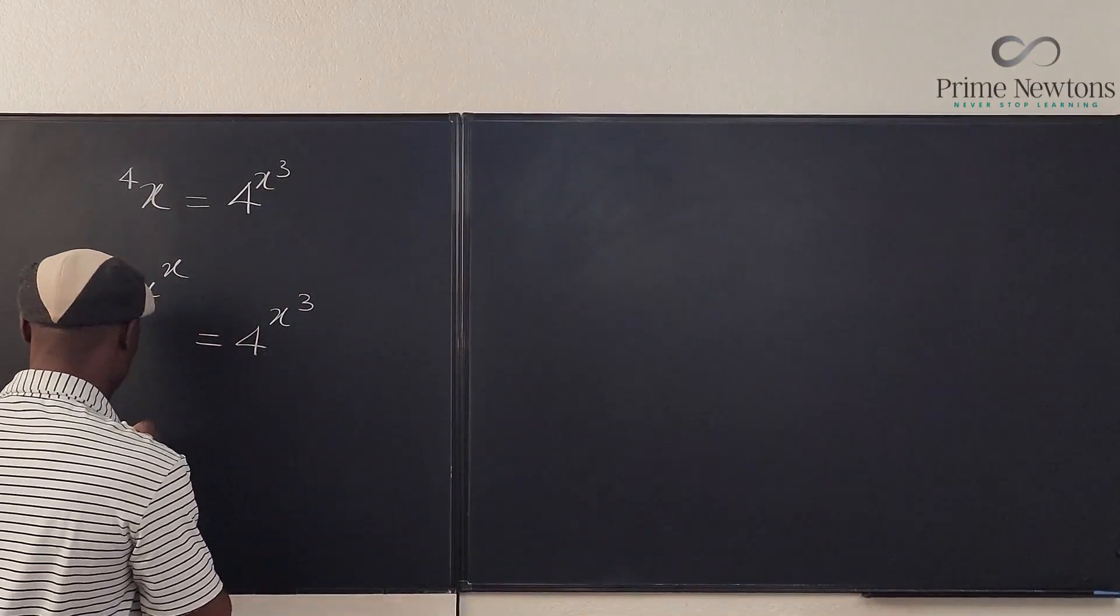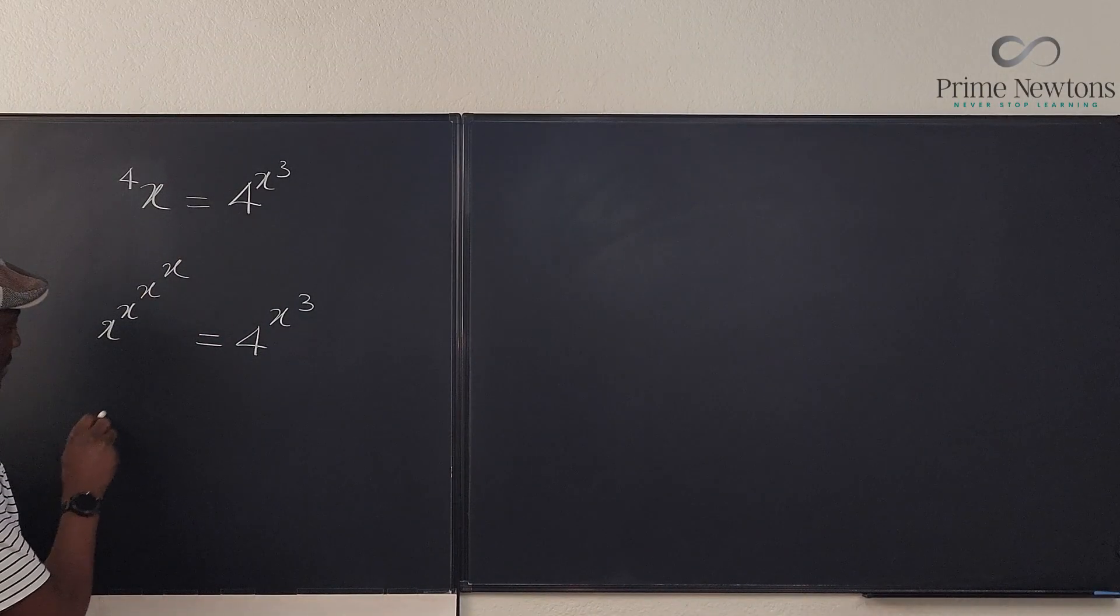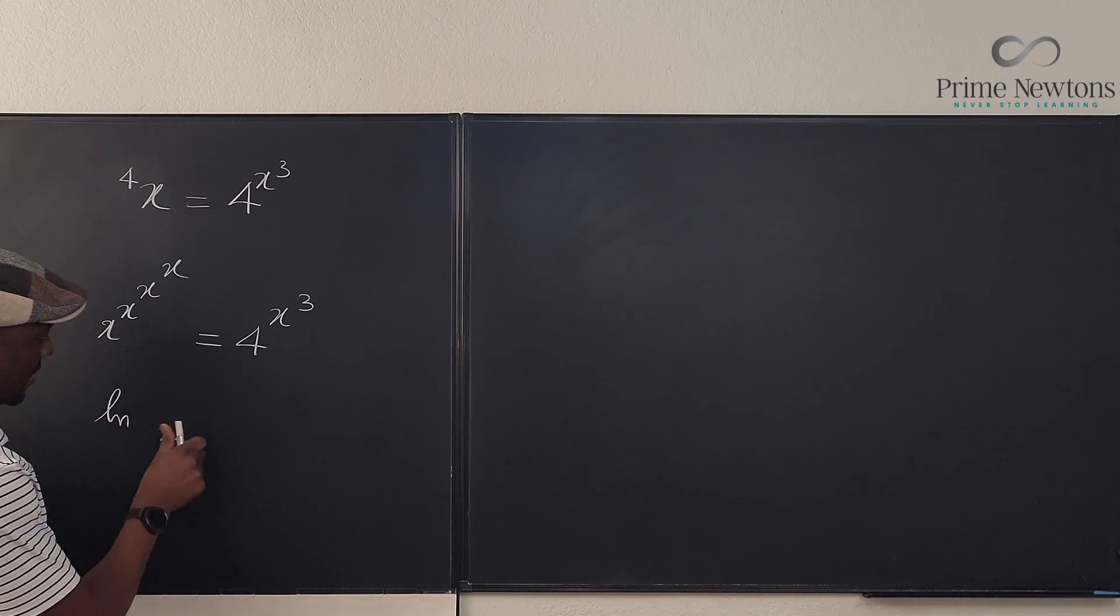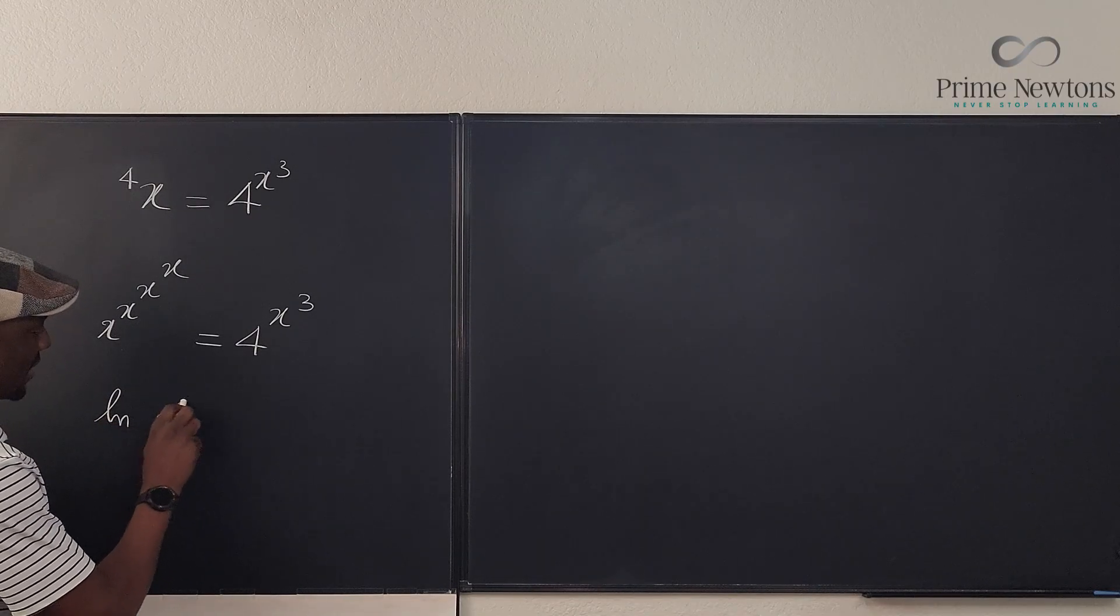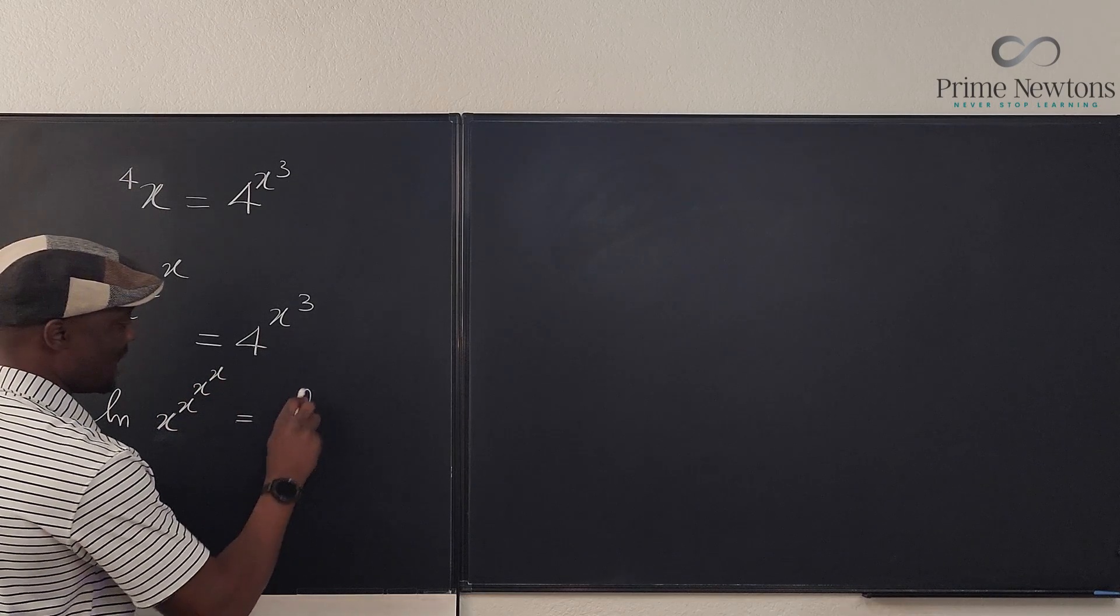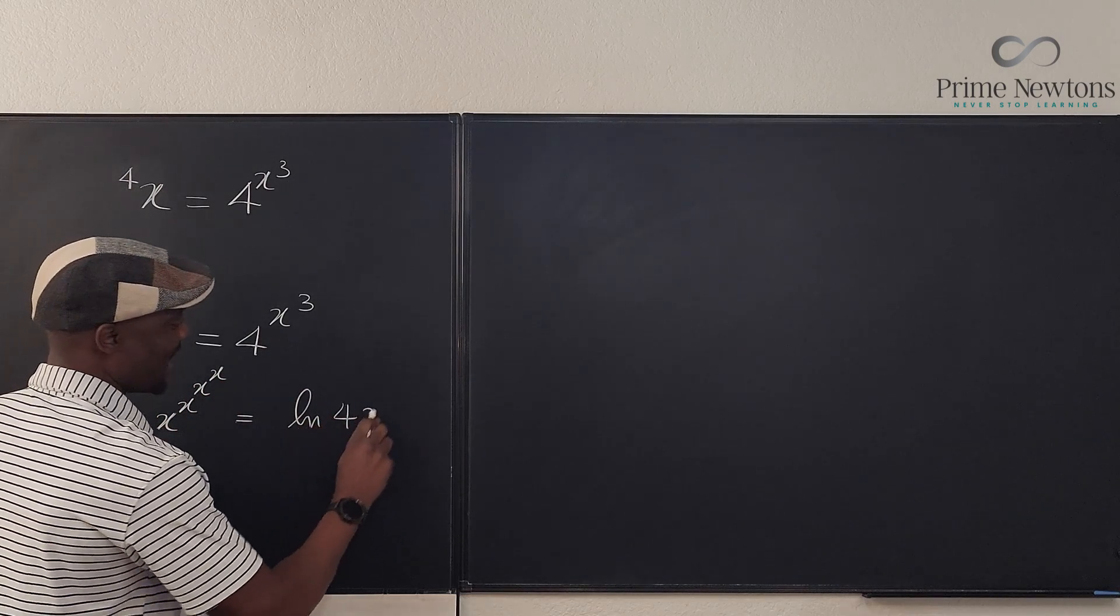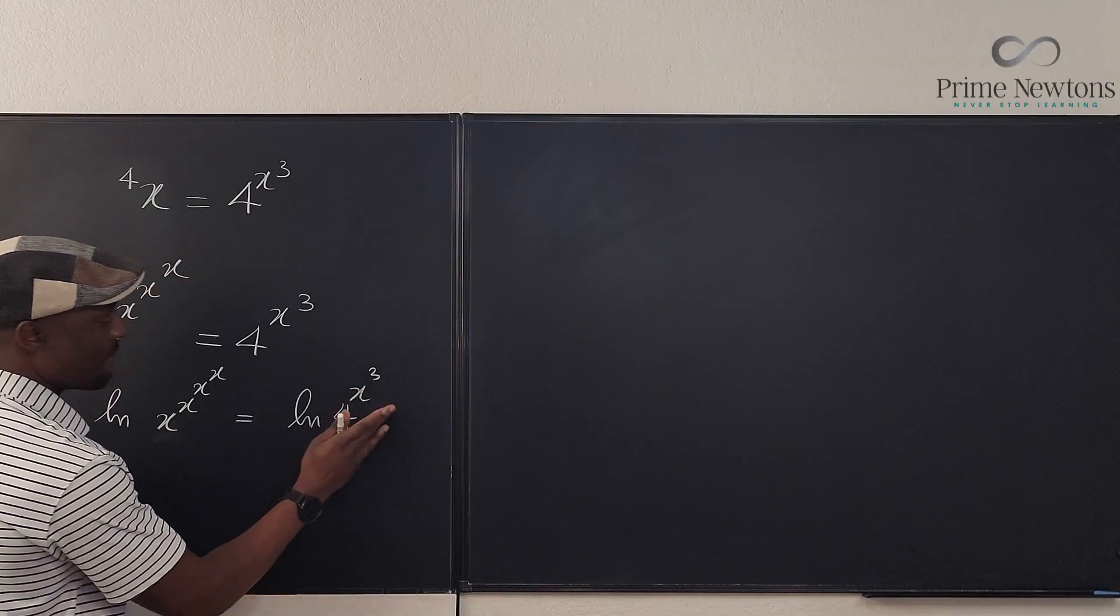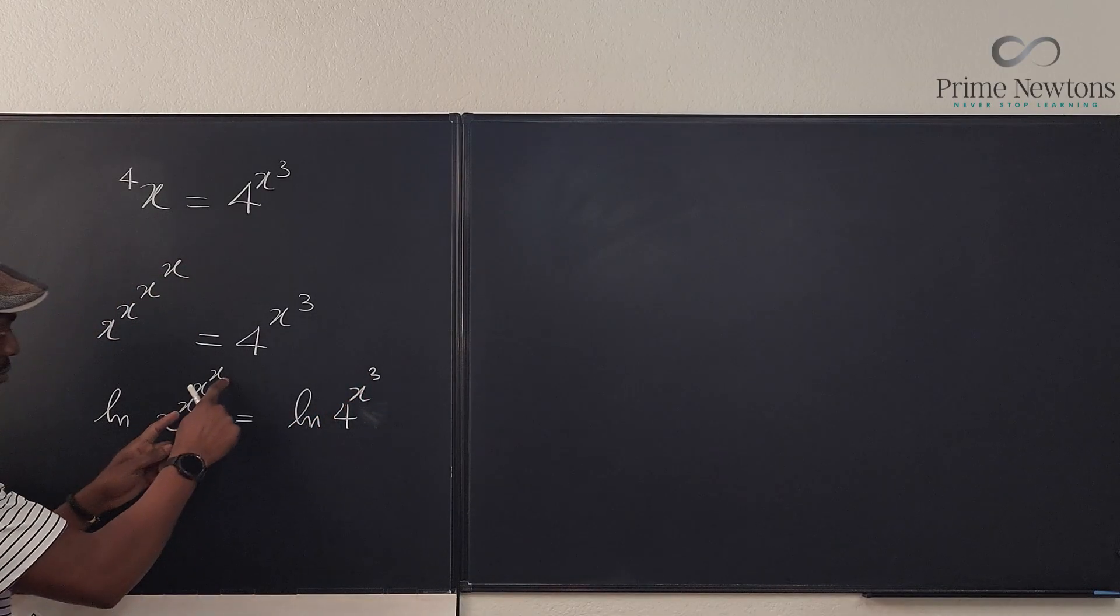So if we take the natural log of both sides, we're gonna have the natural log of x to the x to the x to the x will be equal to the natural log of 4 to the x cubed.